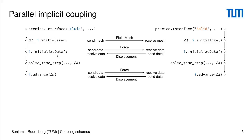Then we can directly start with the first time step, and here we can already use this initial data for performing our time step. And when the time step is over, we call advance in order to establish the coupling via PreSize again.